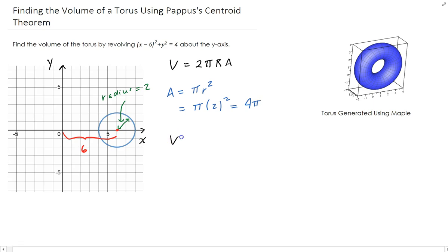It's going to be 2 times pi times the radius of the volume that's being generated, which is 6, times the area of the circle. That's going to give us 2 times 6 times 4, so that's going to be 48 pi squared.